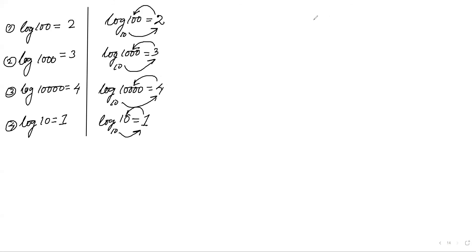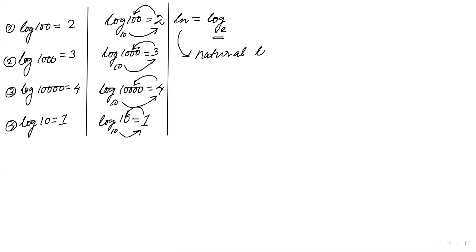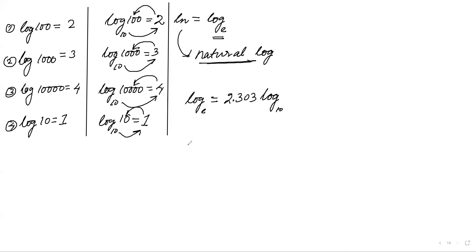ln is equal to log with a base of e — this is called natural log. The value of e is approximately 2.718. The conversion formula is: ln = 2.303 × log₁₀. All log values in your calculator are for base 10, which is easier for humans to calculate with nice numbers. This is why we use 2.303 in the Nernst equation when converting from ln to log.